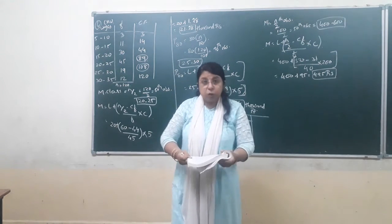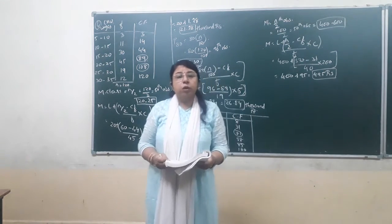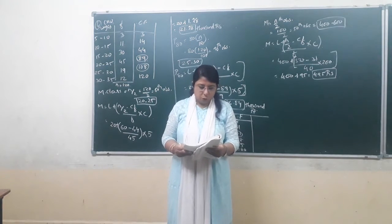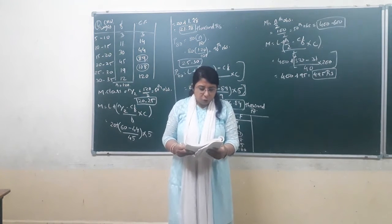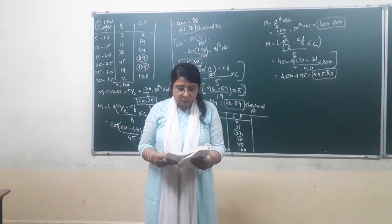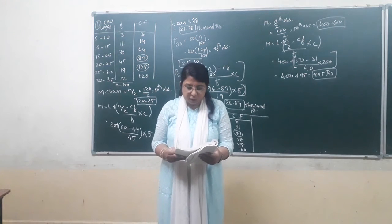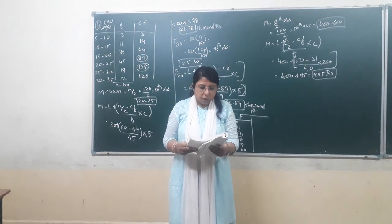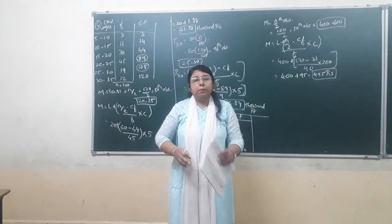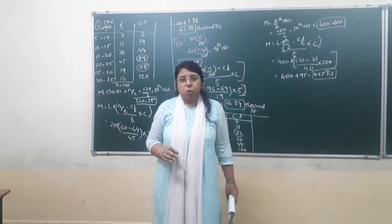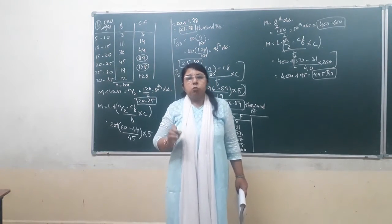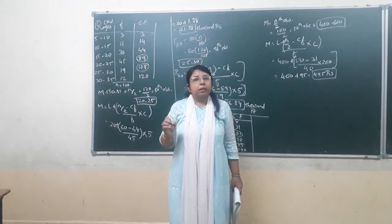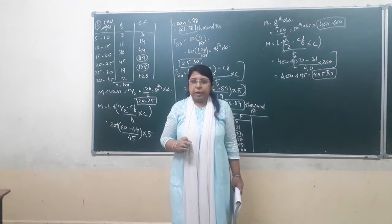Let's read question number 4, which is on page number 99 of your textbook. Use all the data to find the median salary of employees in a firm. Also find a lower limit for the richest 20% employees. So there are two things to find: one is the median, and the other is the percentile.